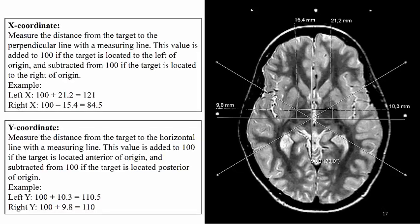In order to get the x-coordinate, we measure the distance from the target to the perpendicular line with the measuring line. This value is added to 100 if the target is located to the left of origin and subtracted from 100 if the target is located to the right of origin.